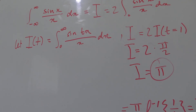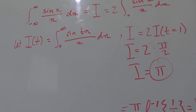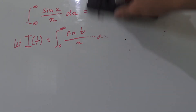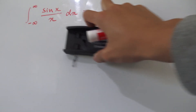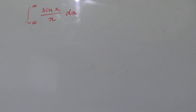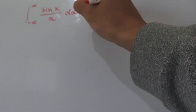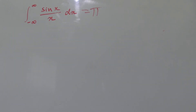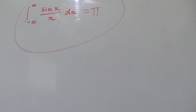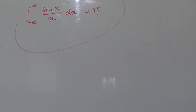And that is the answer to our original integral. So our integral from negative infinity to infinity of sine of x over x dx equals pi. I hope you guys enjoyed this video, and I'll see you next time.